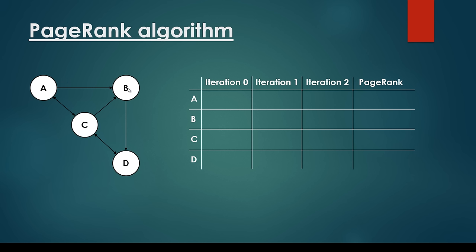Basically, the connections represent the links. So A is pointing to B — meaning website A contains a link pointing to B. C is pointing to B, B is pointing to D, and so on.